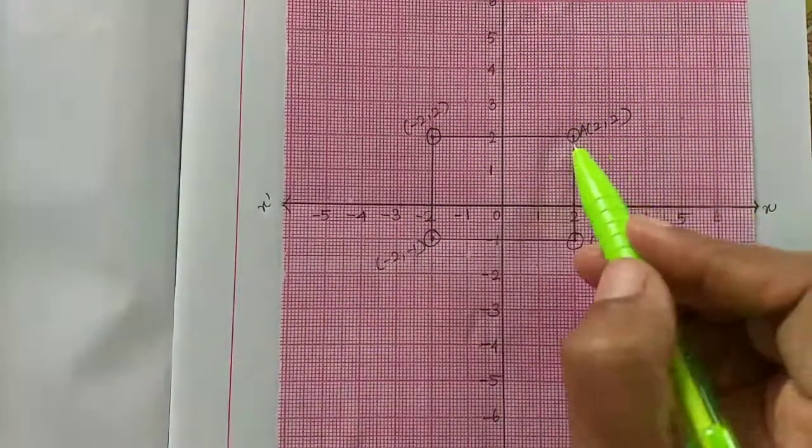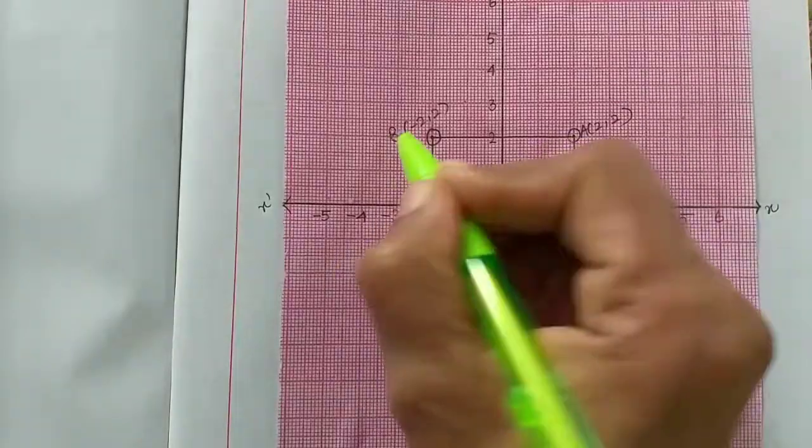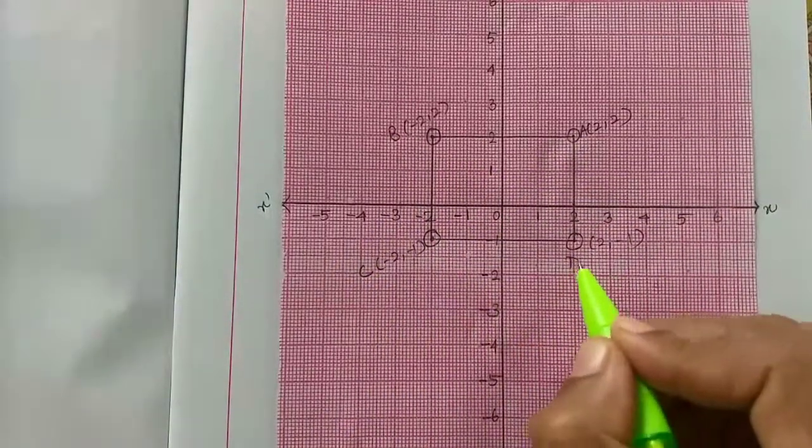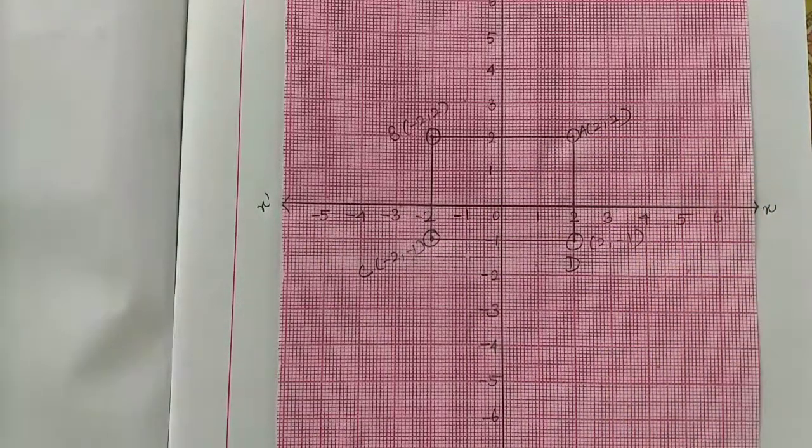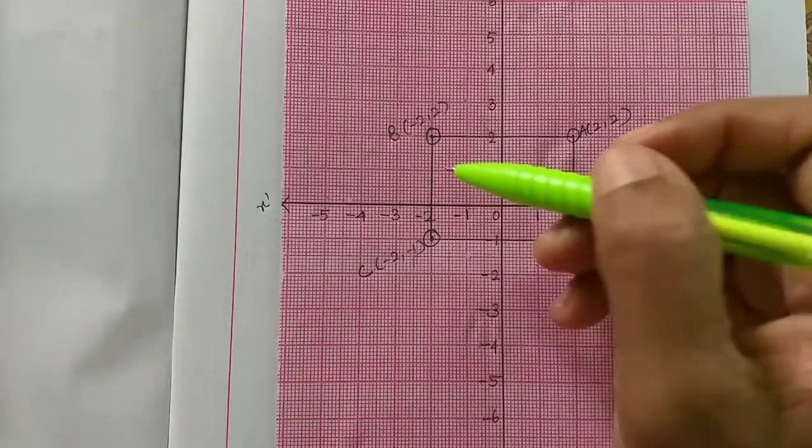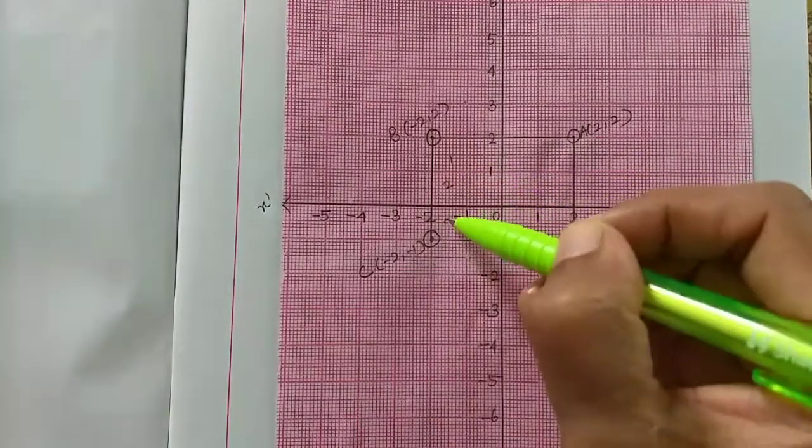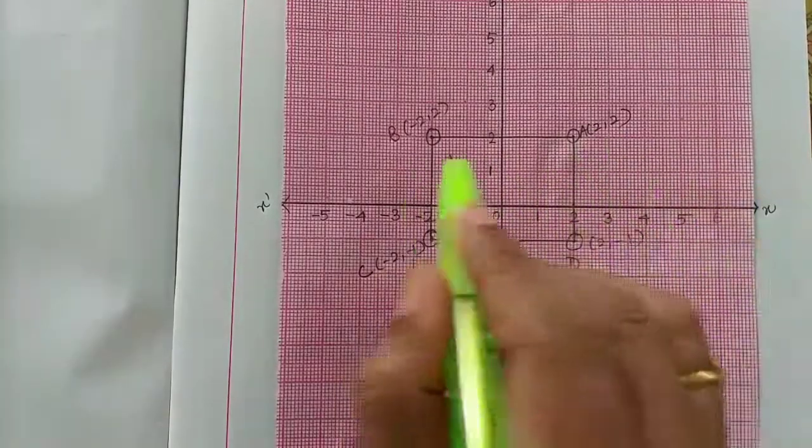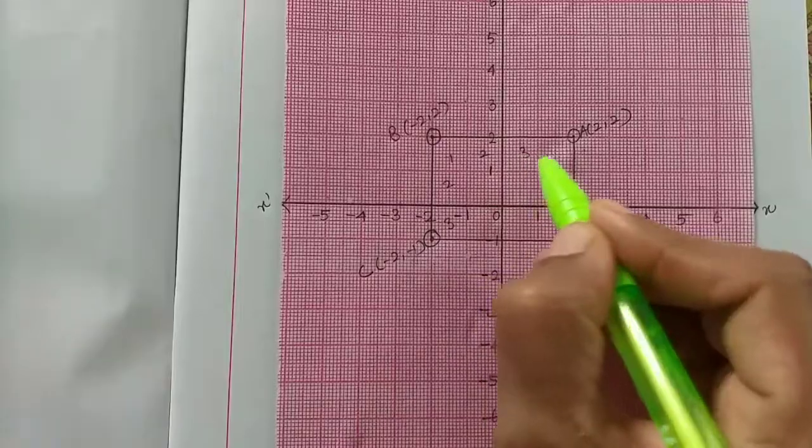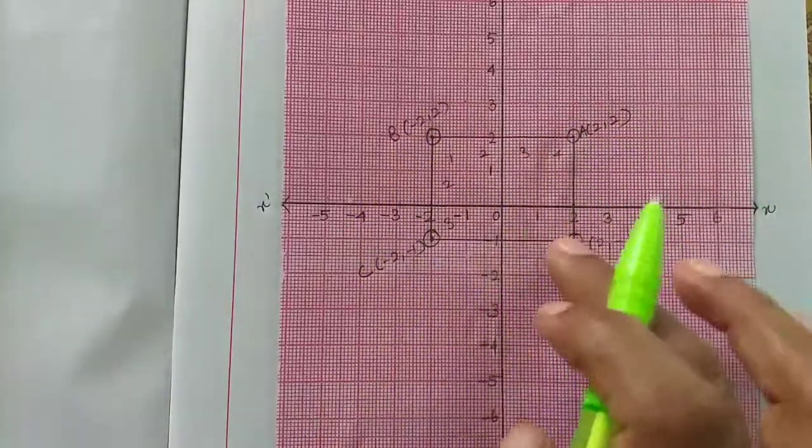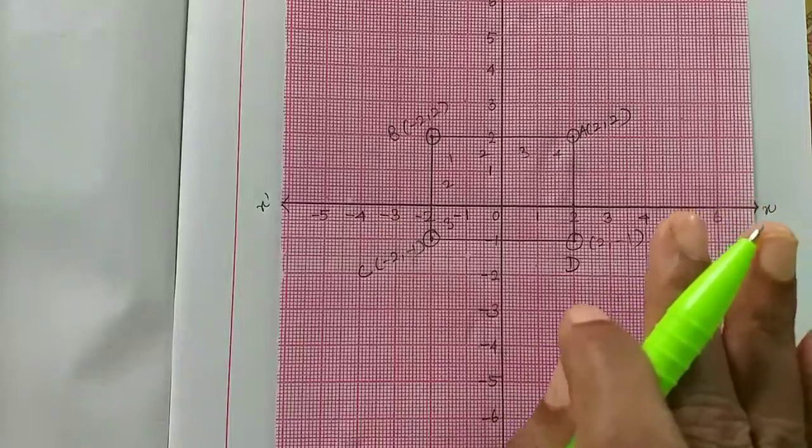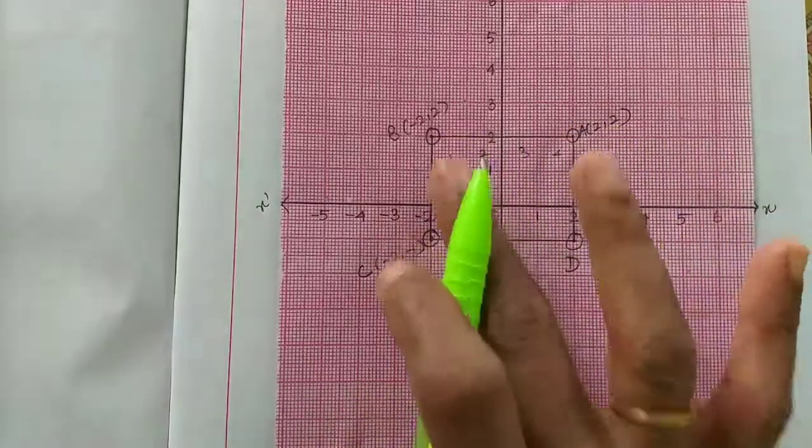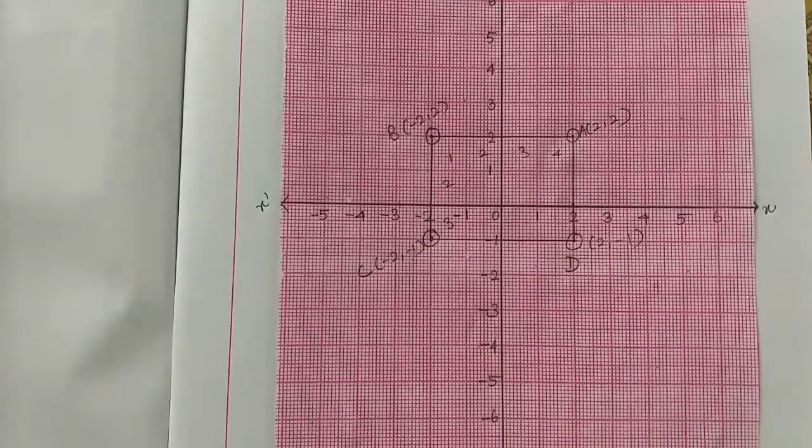Okay, so join the points A, B, C, and D in anti-clockwise order. What shape is this? Now on the vertical side there are 1, 2, 3 boxes. On the horizontal side there are 1, 2, 3, 4 boxes. So this is a rectangle shape, right?